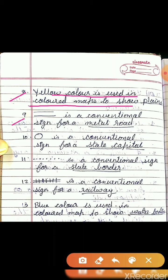Statement 9: A road-like sign is a conventional sign for a blank. The answer is metal roads.